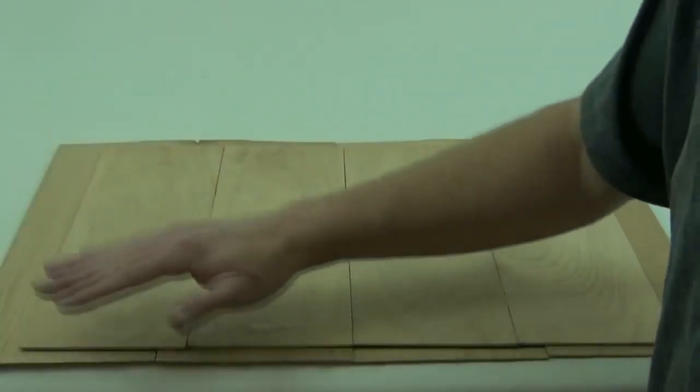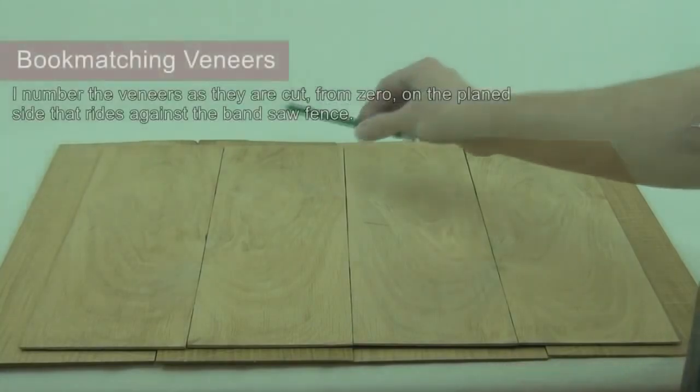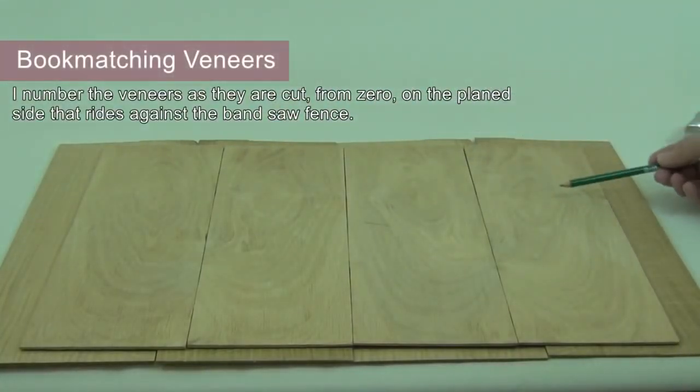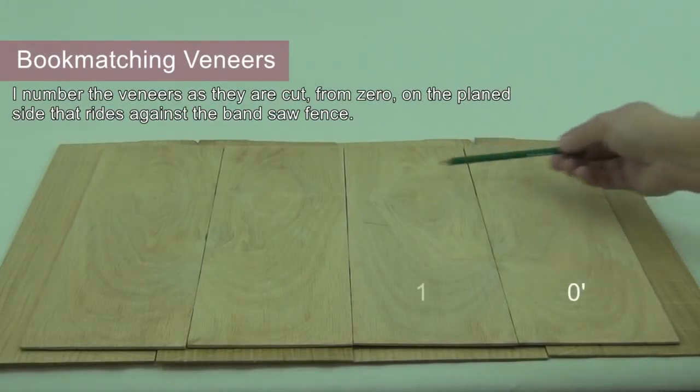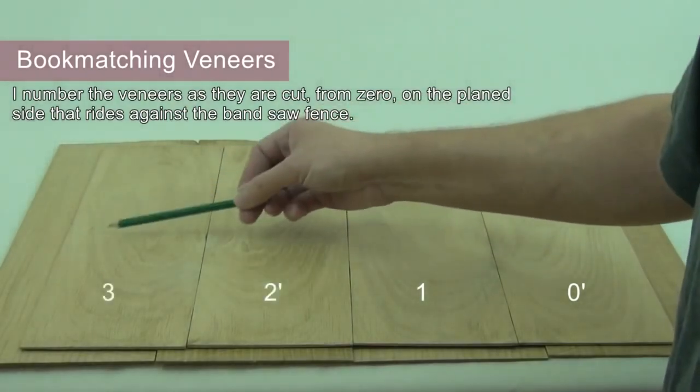With the veneers planed nice and flat, we can lay them out ready for veneering our cabinet doors. And I've gone with a bookmatched pattern for each door. So I've got veneer 0 with the reverse side up against veneer 1 and the reverse side of veneer 2 against veneer 3.